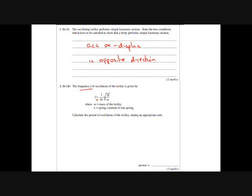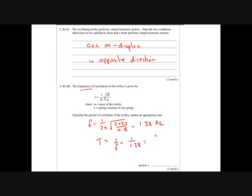To work out the frequency of the trolley, we've been given the expression f = (1/2π)√(2k/m) — this is T = 2π√(m/k) rearranged, with 2k because we've got two springs. The frequency is (1/2π)√(2 × 30 / 0.8), giving a frequency of 1.38 Hz. Then to get the period, T = 1/f = 1/1.38 = 0.73 seconds. Don't forget the units — there is a mark for the units on that question.